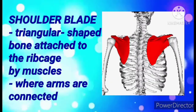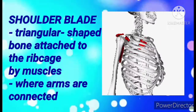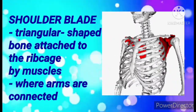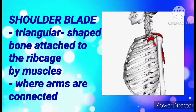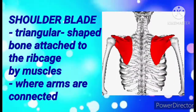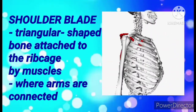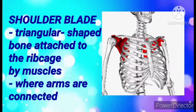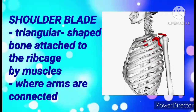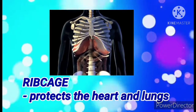Next, we have the shoulder blade. It is a triangular-shaped bone attached to the rib cage by muscles, and it connects to our arm.